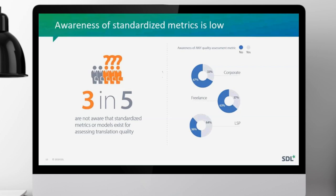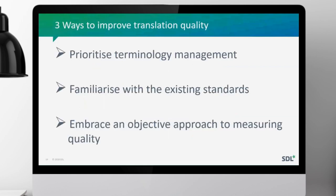The awareness of standardized metrics is very low within the industry — three people in five are not aware of standardized metrics or models. There are some metrics and standardized systems in the industry, but they are very rarely used and only a few companies actually implement them. To conclude on quality: quality is significantly more important than any other factor, terminology management is the highest cause of rework, and the three key areas to focus on are terminology management, learning existing standards, and implementing a standardized quantitative-based system to measure quality.